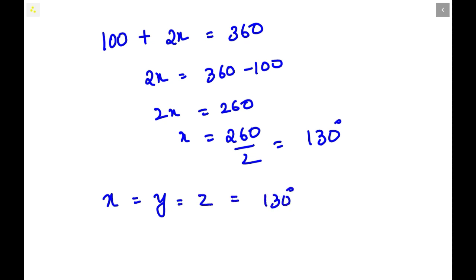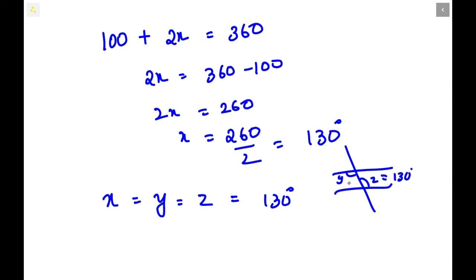There is another option for finding Z more easily without so much calculation. When you take a transversal, corresponding angles will be equal. So according to the diagram, Z is 130 degrees, and the corresponding angle Y will also be 130 degrees. And X can also be found as 130 degrees according to the parallelogram property. In this way also, we can solve this problem.